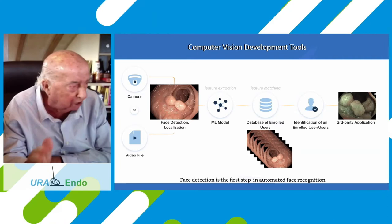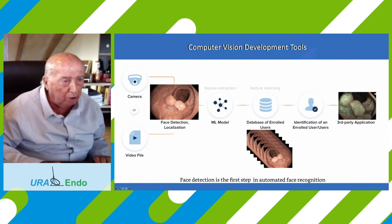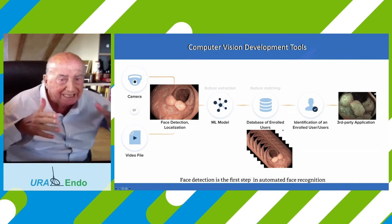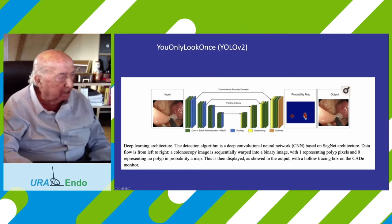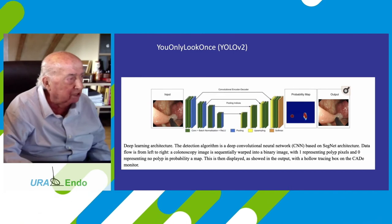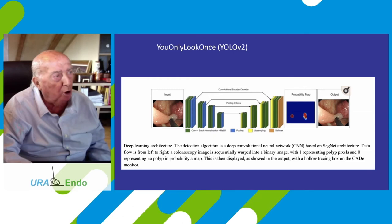This shows two granulomas after surgery in the colon. With a database of enrolled images — many excellent pictures — identification is possible through the database. This is very important. This is the central part of this second section of the topic. The analysis uses YOLO version two, which looks only once.